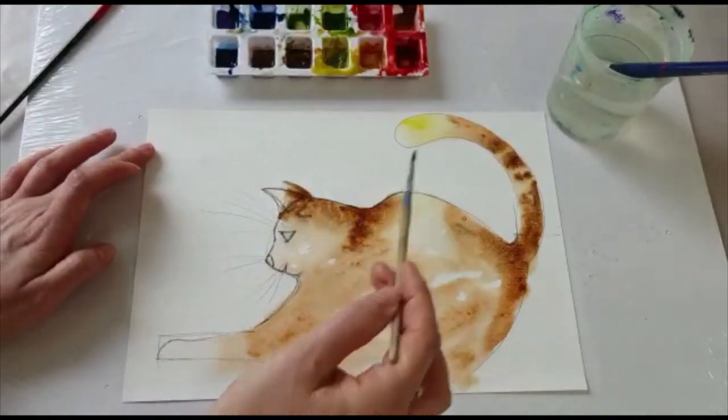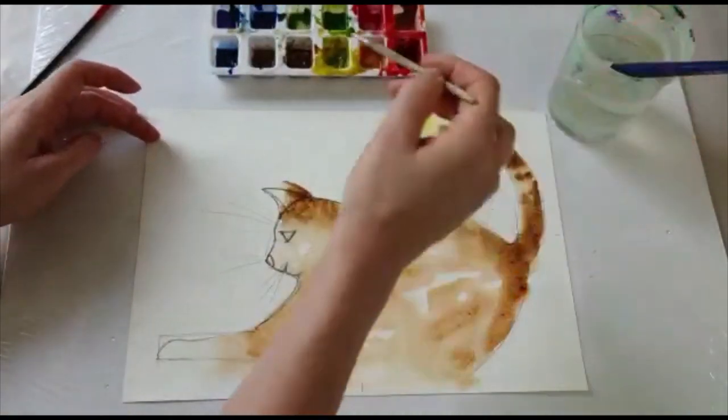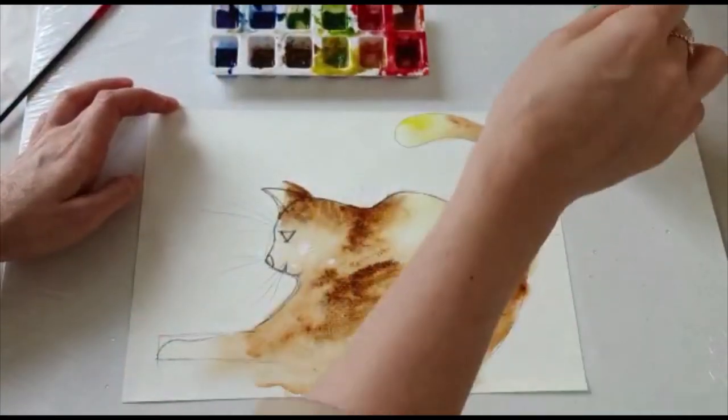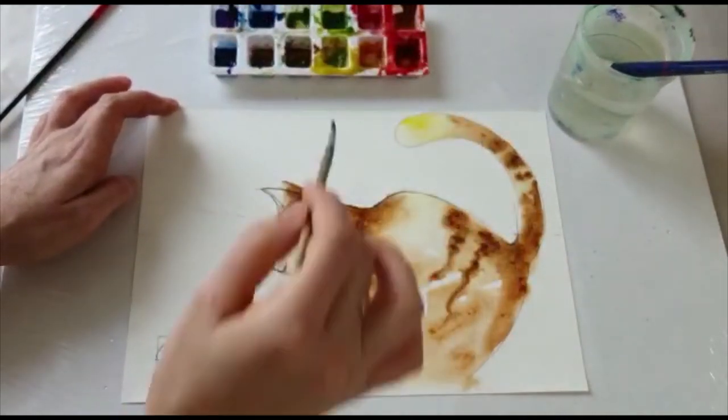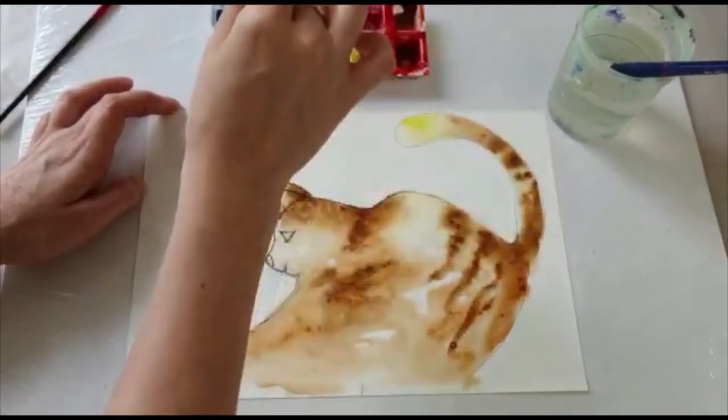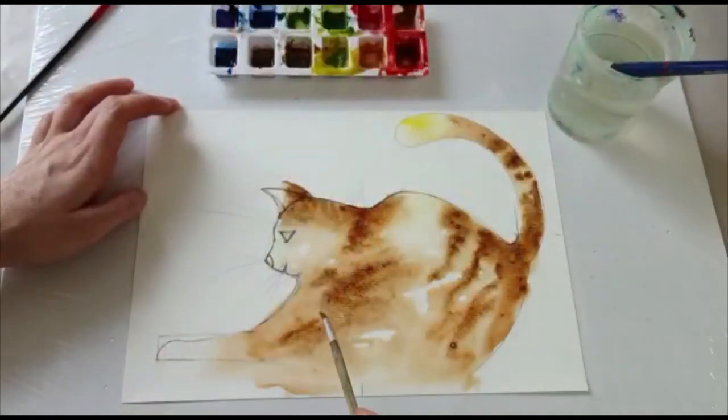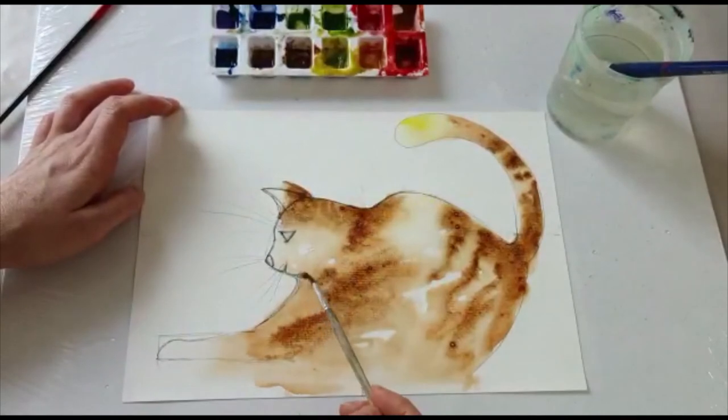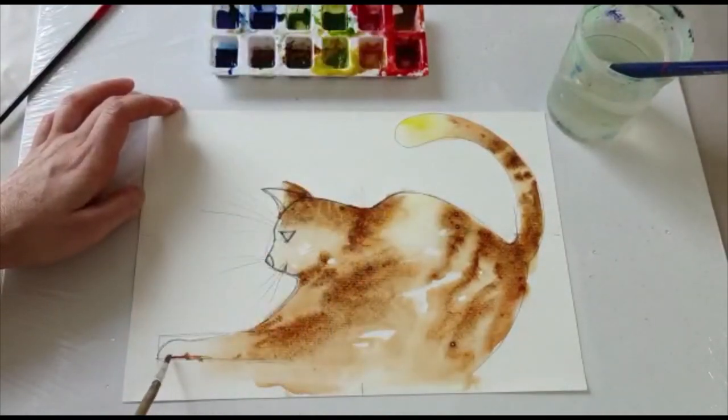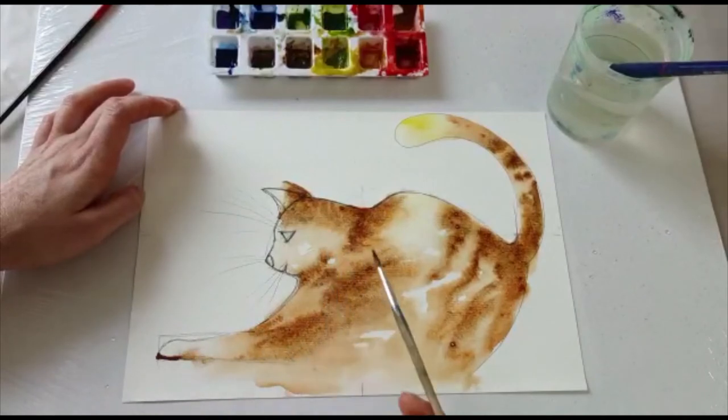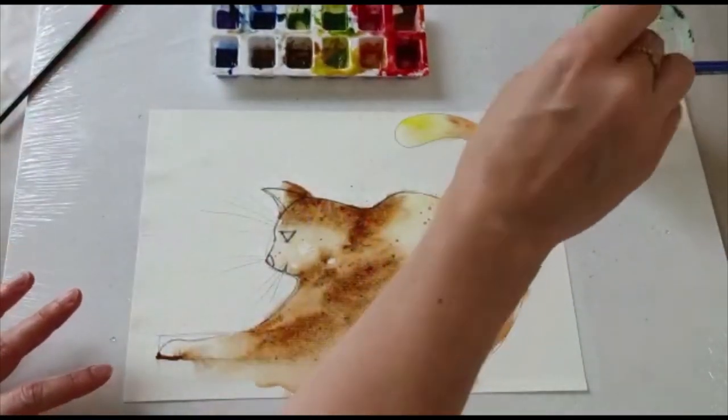And show the shaded parts, the parts which are in the shade. Little by little, don't rush and try to make your base and make it look like a nice fluffy cat.